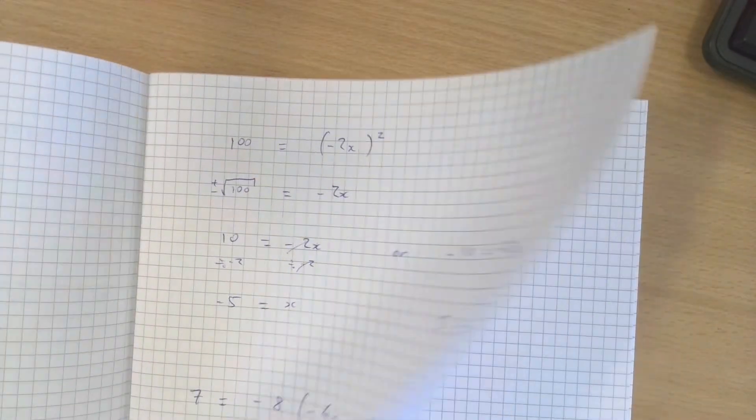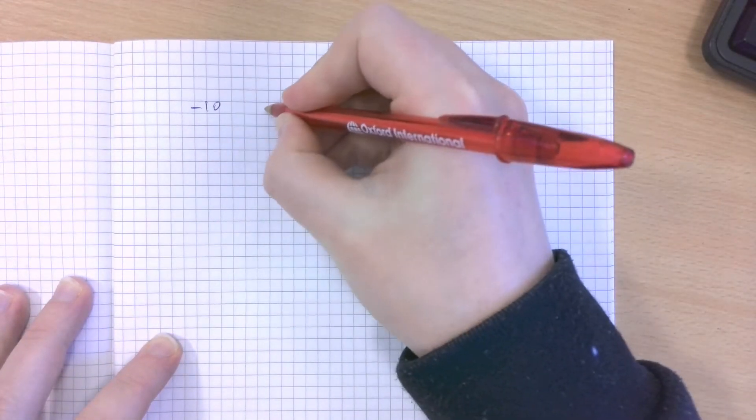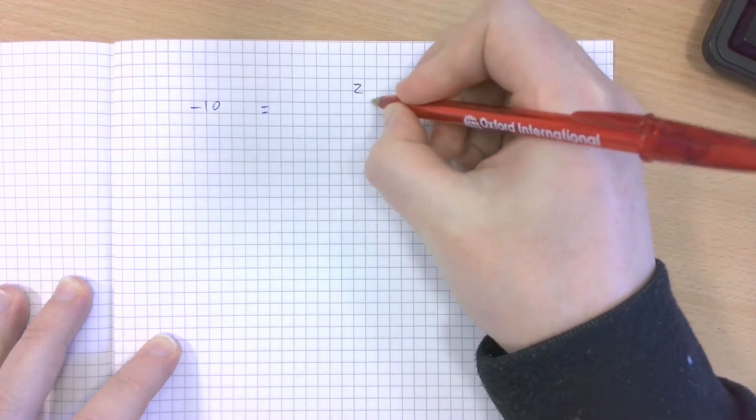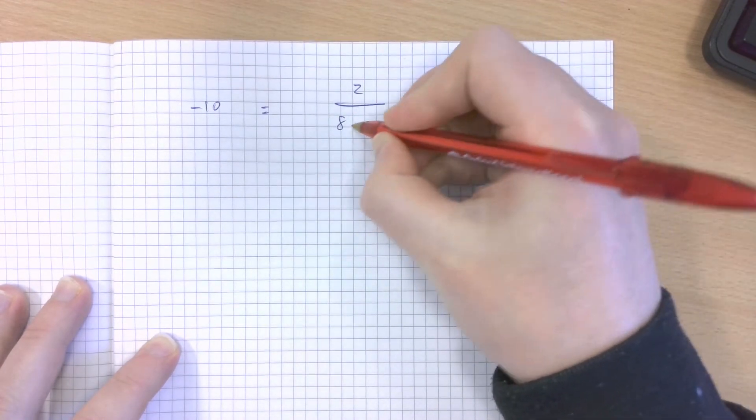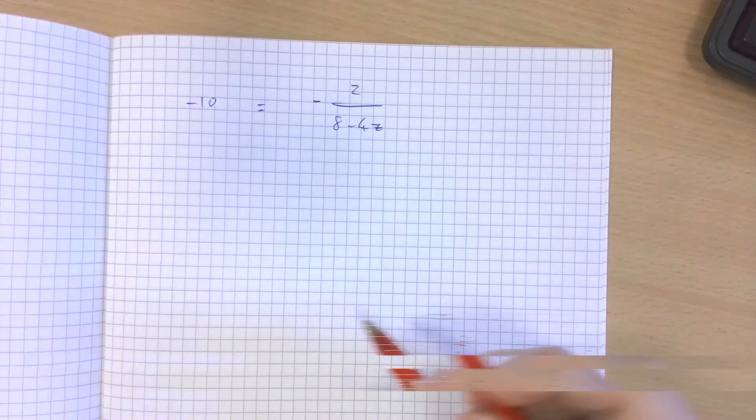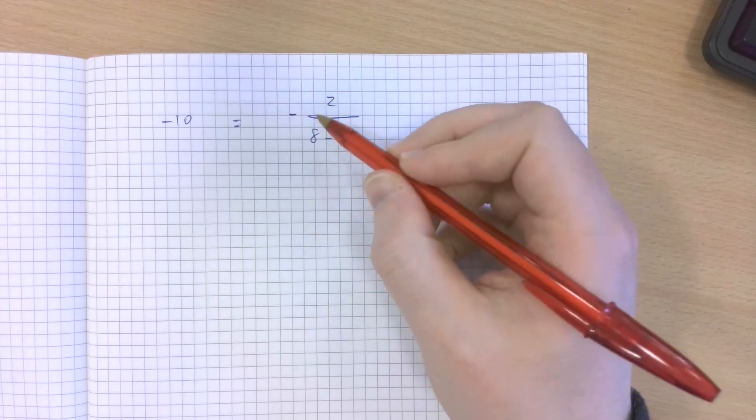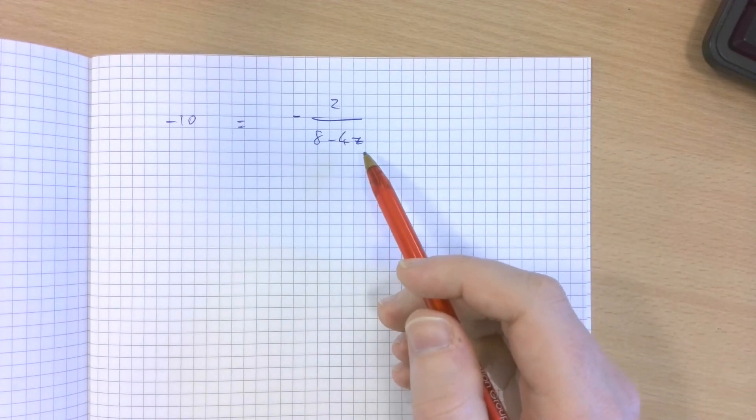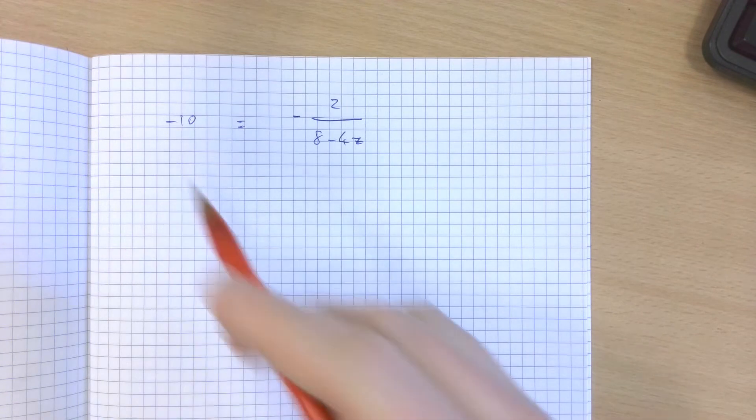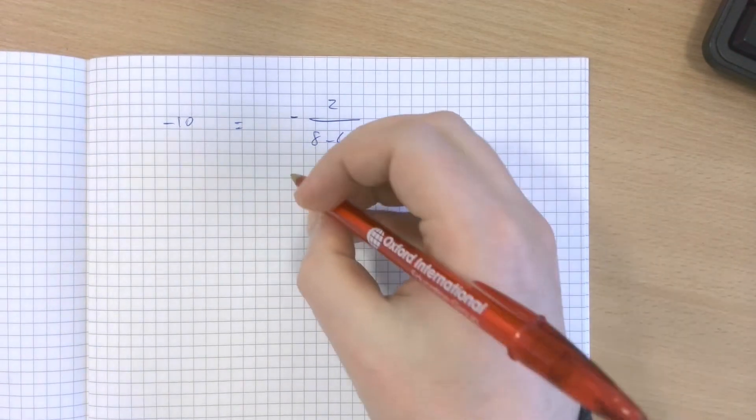And then the final question: negative 10 equals 2 over 8 minus 4z. And the fraction has a minus sign in front of it. I can think of that minus sign as being attached to the numerator. I'm going to first of all get the unknown on the denominator of this fraction to the other side by multiplying both sides by 8 minus 4z.